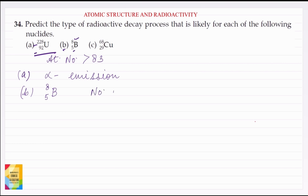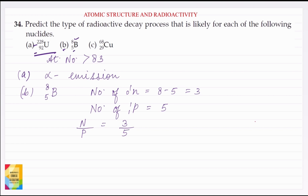Number of neutrons = mass number minus atomic number, that is 8 minus 5 = 3. And number of protons = atomic number = 5. So the N/P ratio is 3/5.